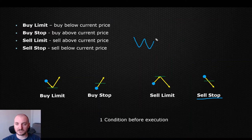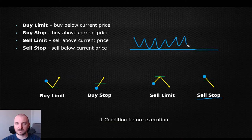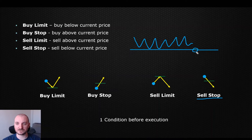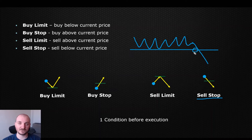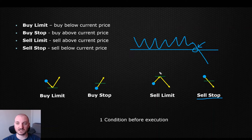On the other hand, we have the sell stop, where we can give the example of the range again. We're looking for a breakout below this zone, which means we're going to put a sell stop order right here. And if the current market price drops below the level we have specified, we're going to execute a sell order right here.